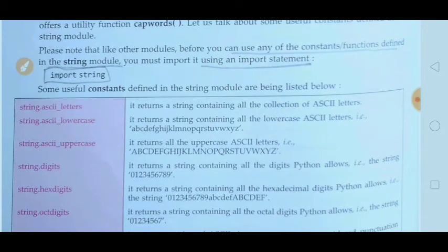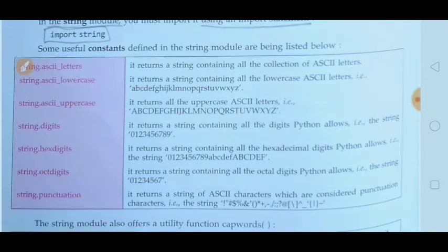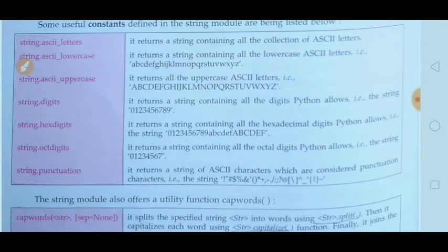One by one we will discuss them. string.ascii_letters is a constant for a collection of all ASCII letters — digits 0 to 9, capital A to Z, and small a to z. string.ascii_lower returns a string containing all lowercase ASCII letters. string.ascii_uppercase returns all uppercase ASCII letters. string.digits returns all digits that Python allows. string.hexdigits returns all hexadecimal values.